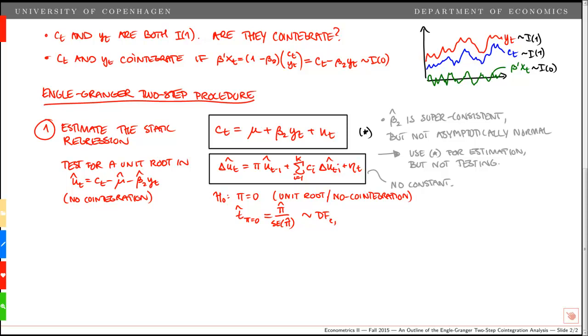But it depends on the deterministics and the number of regressors that we have in the static regression up here. The asymptotic distribution under the null depends on the deterministics and the number of regressors in the static regression, denoted star. If we have more than one regressor, which we have in our case here, then we will shift the Dickey-Fuller distribution to the left as we add more regressors. But here we only have one regressor, yt, and on top of that we have a constant term. We could also have a trend term in the static regression up here, and that would change the asymptotic distribution.